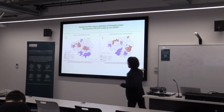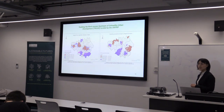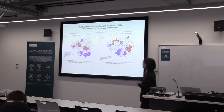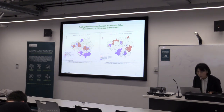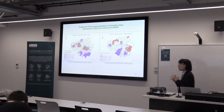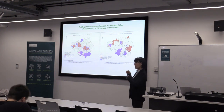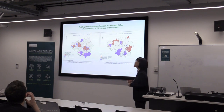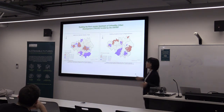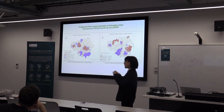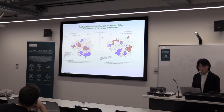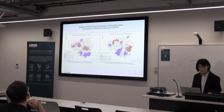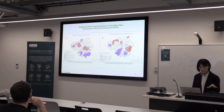We use the Local Moran's I statistic to identify hotspots of deaths from respiratory disease in Manchester. From this analysis it is very clear — we can see high-high clusters represented by red color, and also high-low outliers, low-high outliers, and low-low clusters. High-high cluster means these areas are surrounded by areas with also high values. We can see that deaths from respiratory disease are concentrated in northern Manchester, and also somewhere in Wigan and Bolton.